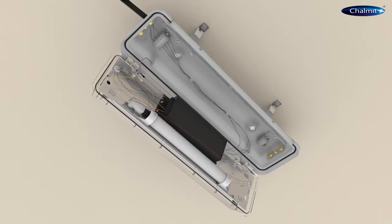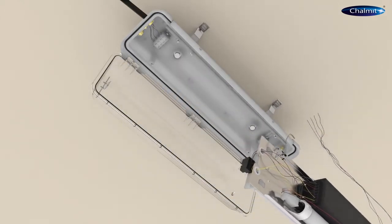Disconnect the ballast supply from the mains terminal block, then carefully remove the gear tray and attach the hanging straps.